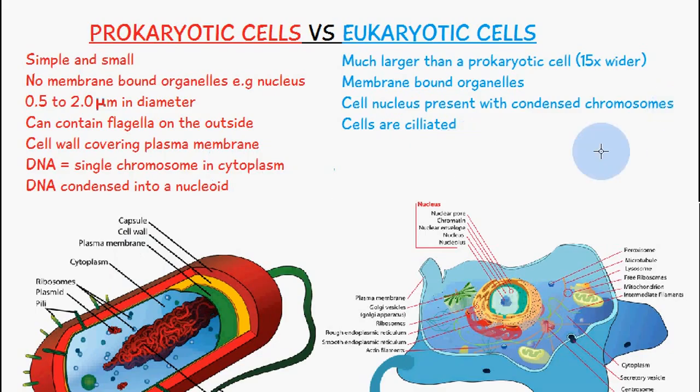A eukaryotic cell is much larger than a prokaryotic cell — approximately 15 times wider and up to a thousand times greater in volume. Eukaryotic cells contain membrane-bound organelles, such as a nucleus or a mitochondria. Eukaryotic cells also contain a cell nucleus which holds condensed chromosomes inside, as well as other structures.